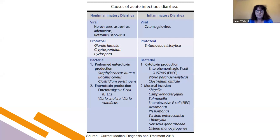Diarrhoea can have infectious causes, which can be non-inflammatory or inflammatory. Non-inflammatory causes include viruses like norovirus or rotavirus, protozoa such as Giardia or Cryptosporidium, or bacterial causes including cholera. Inflammatory diarrhoea can be caused by cytomegalovirus, amoebiasis, and bacterial causes including the common Campylobacter, Shigella, and Salmonella.